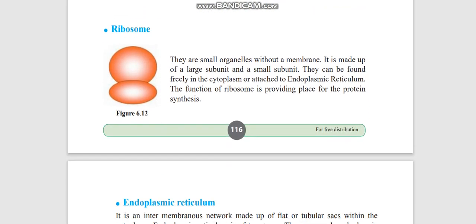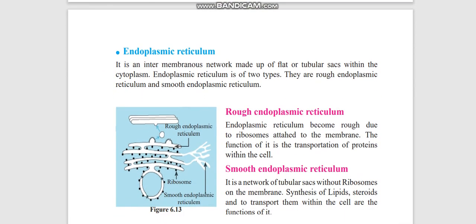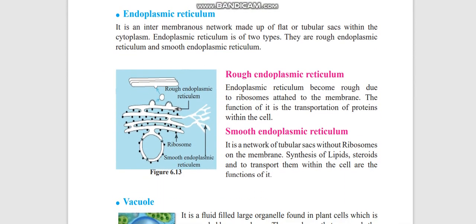The other one is ribosome. Ribosome is made up of two subunits: a large subunit and a smaller subunit. When they are attached to endoplasmic reticulum it becomes rough. The function of ribosome is protein synthesis, providing place for protein synthesis. Endoplasmic reticulum, you have two types: rough and smooth. When ribosomes are attached it becomes rough, then it helps for transportation of proteins. Smooth ones are without ribosome, they help in the synthesis of lipids and transport them within the cell.